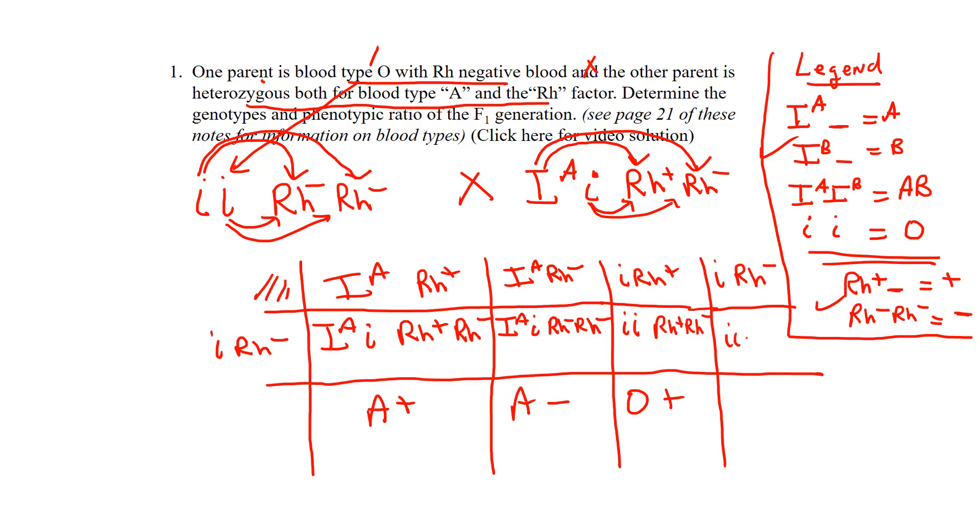Do the last one. Little i, little i, RH negative, RH negative. That one's going to be O negative. So what's our ratio? They wanted a phenotypic ratio of the F1 generation. It would be a 1 to 1 to 1 to 1 ratio. I know this is a little more complicated than what we've been doing in the past. If you have any questions, just give me an email and we'll go over a couple more questions if you'd like. Thanks, guys.